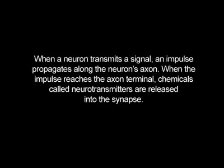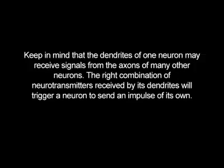When a neuron transmits a signal, an impulse propagates along the neuron's axon. When the impulse reaches the axon terminal, chemicals called neurotransmitters are released into the synapse. Keep in mind that the dendrites of one neuron may receive signals from the axons of many other neurons. The right combination of neurotransmitters received by its dendrites will trigger a neuron to send an impulse of its own.